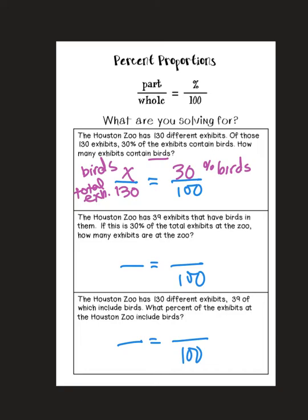Let's look at this next problem. The Houston Zoo has 39 exhibits that have birds in them. If this is 30% of the total exhibits at the zoo, how many exhibits are at the zoo? So I know that we have 39 exhibits that have birds out of total exhibits, and I'm talking about the percent of exhibits that are birds. It says there are 39 exhibits and that's 30% of them, and I want to know how many exhibits there are total. So I'll set it up that way.